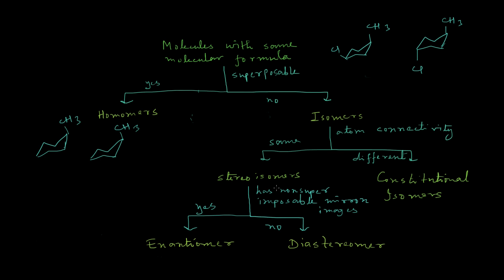Stereoisomers also have two categories: diastereoisomers and enantiomers. The criteria for distinguishing them is as follows: when we have two stereoisomers and one pair possesses a non-superimposable mirror image relationship, then they are called enantiomers. So what is that non-superimposable mirror image relationship?